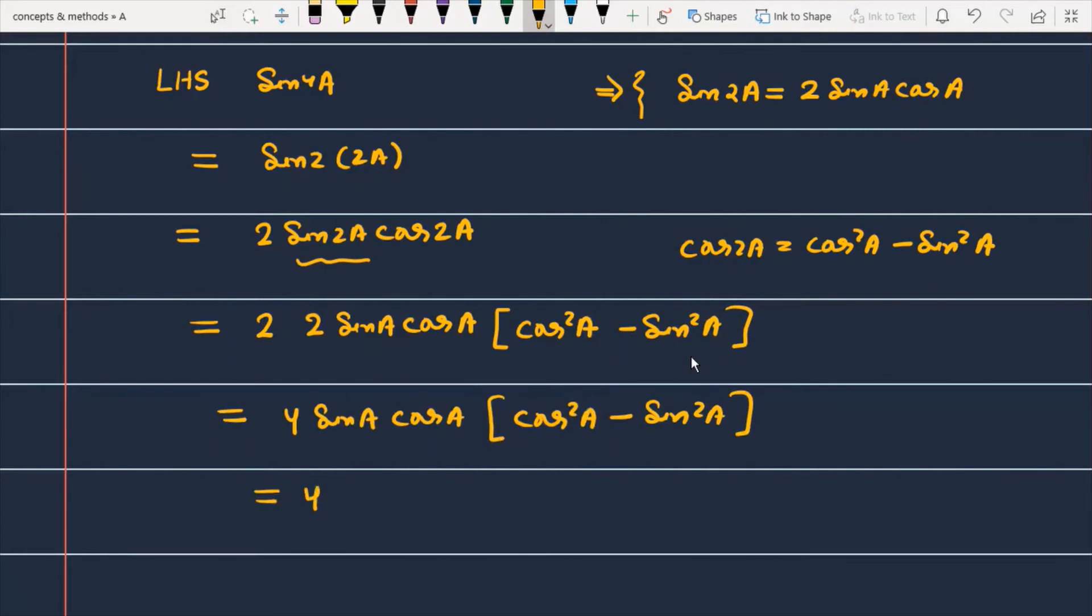If we want to simplify this further, then you can easily check that the first term is 4 sin A, the next term will become cos A, then cos 2A.